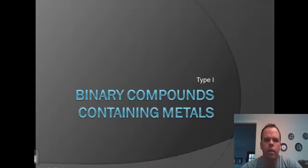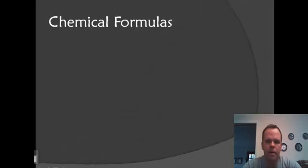The first type of naming that we want to look at is naming binary compounds that contain a metal. This is going to be Type 1. There are two types of naming when it comes to binary compounds that contain a metal. Binary compounds are compounds that contain two atoms, so we're generally going to be looking at two atoms. We'll then start to include polyatomic ions.